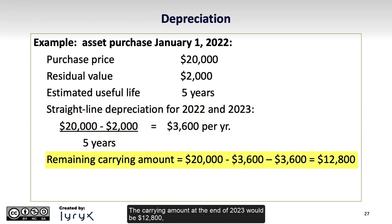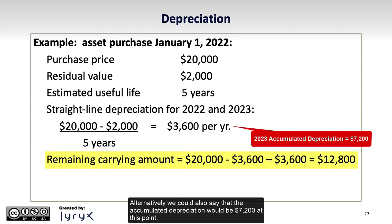The carrying amount at the end of 2023 would be $12,800, or $20,000 less 2 years of depreciation of $3,600 per year. Alternatively, we could also say that the accumulated depreciation would be $7,200 at this point.